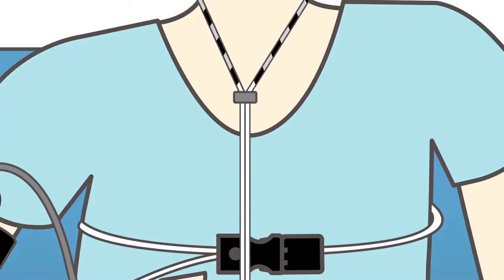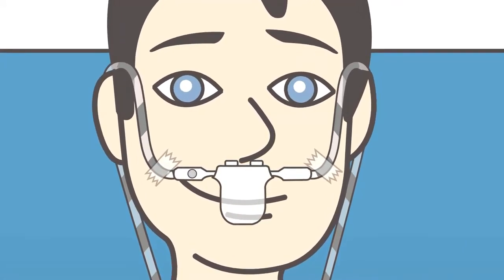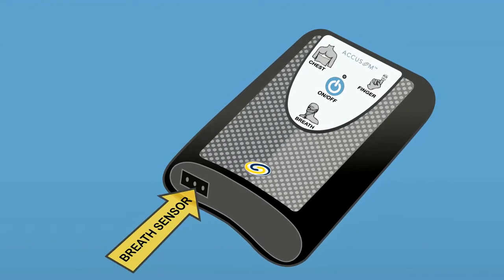You can tighten the slide ring upward and keep the cable in place by using the enclosed medical tape. Plug the breath sensor cable to the bottom of the Accusom.